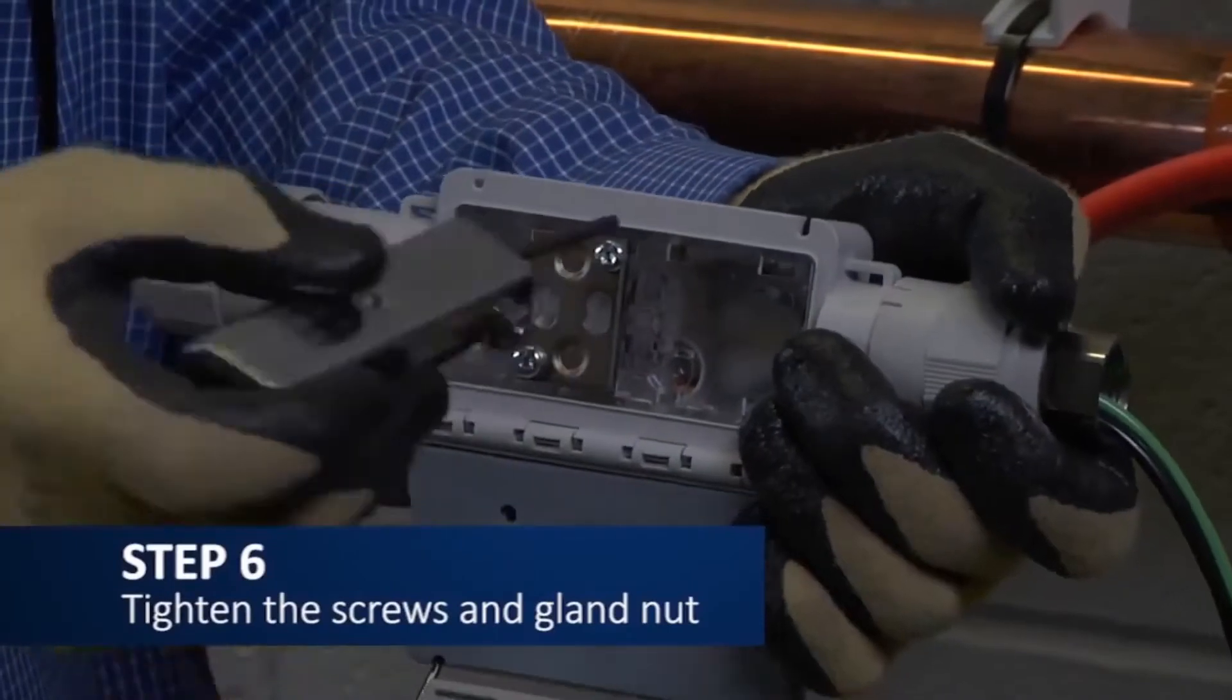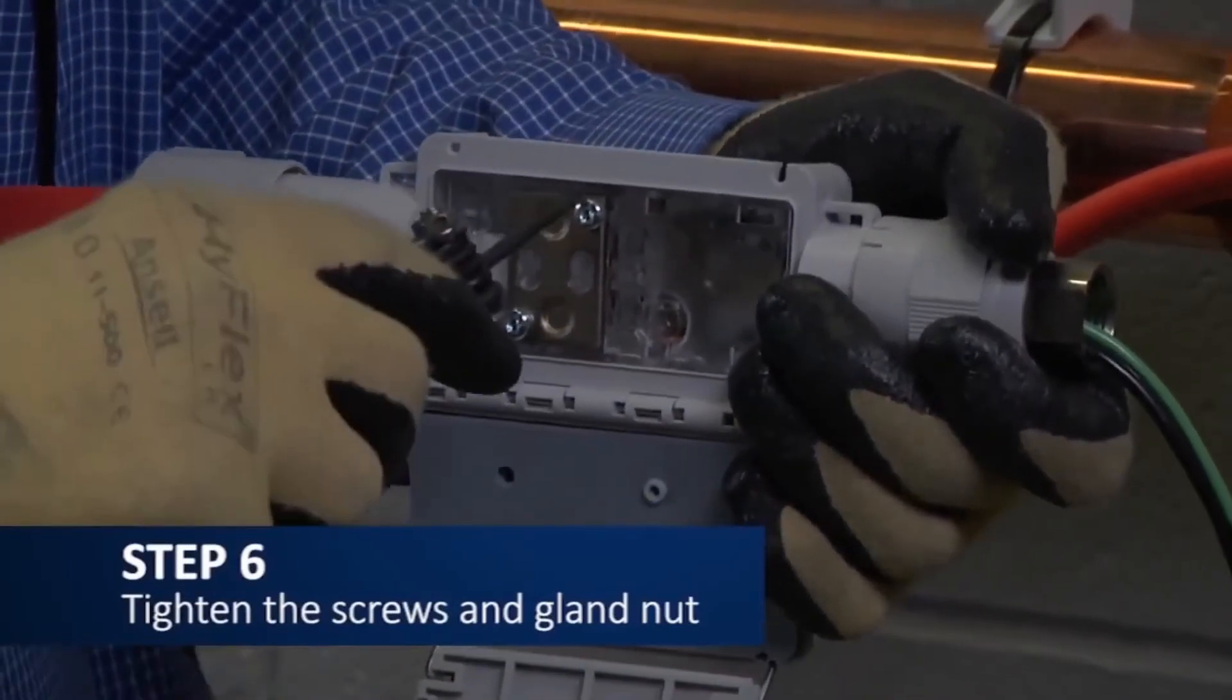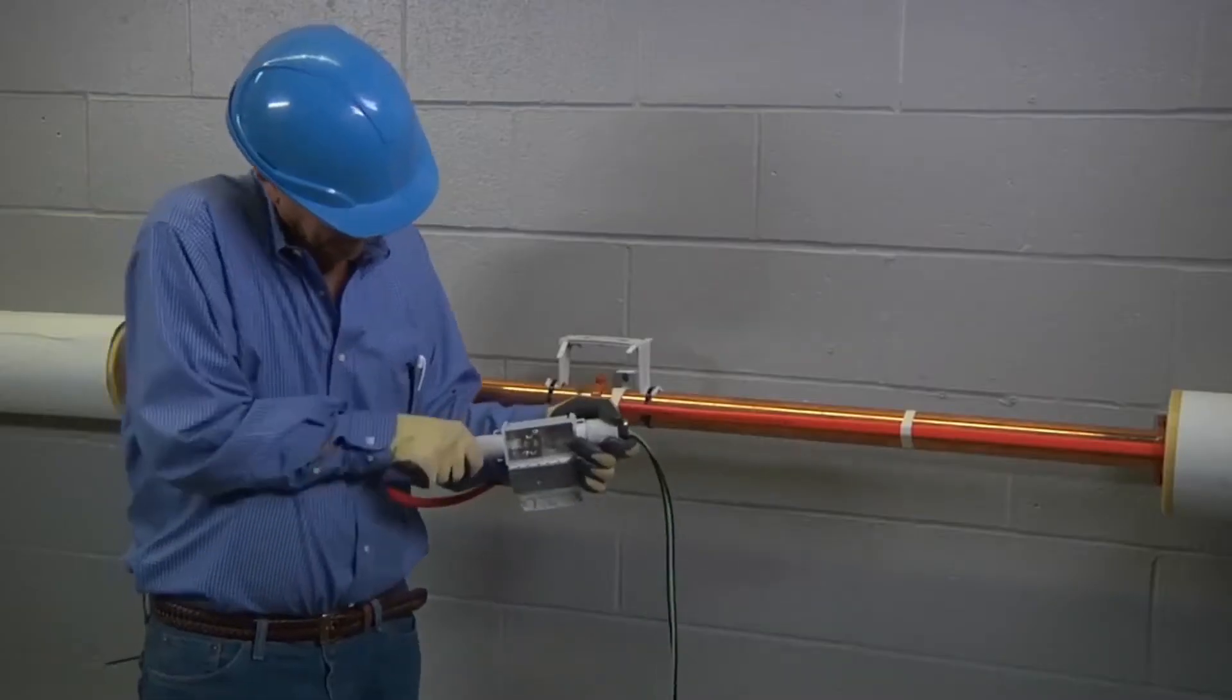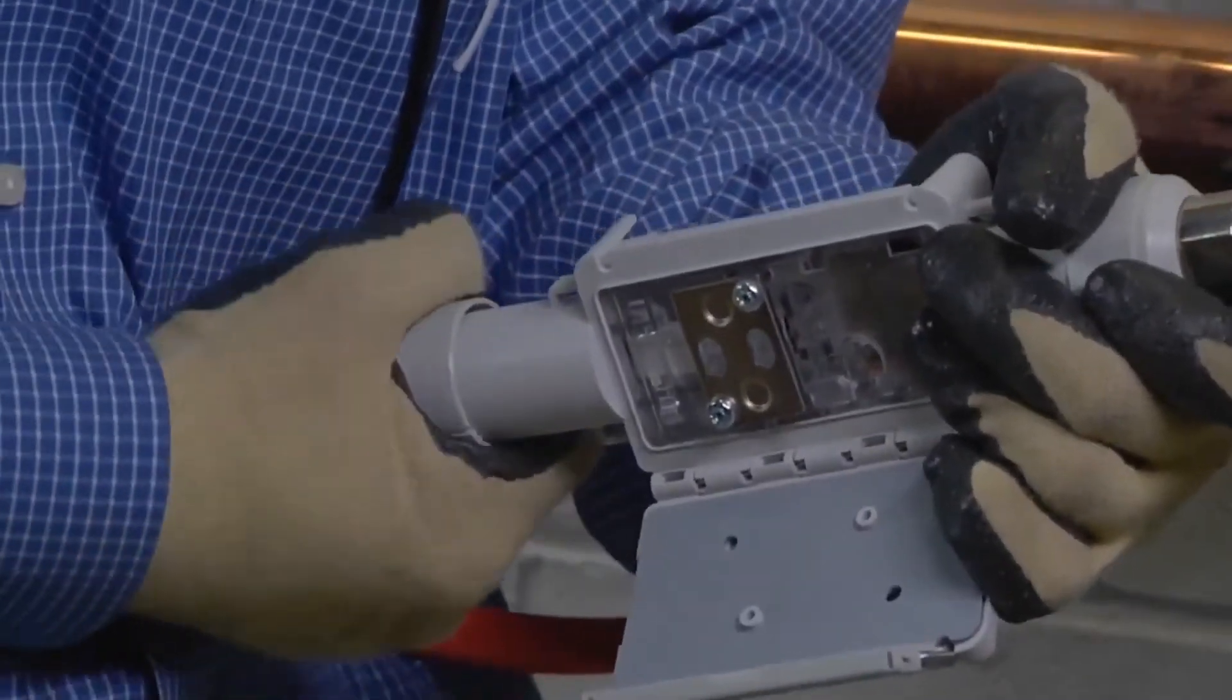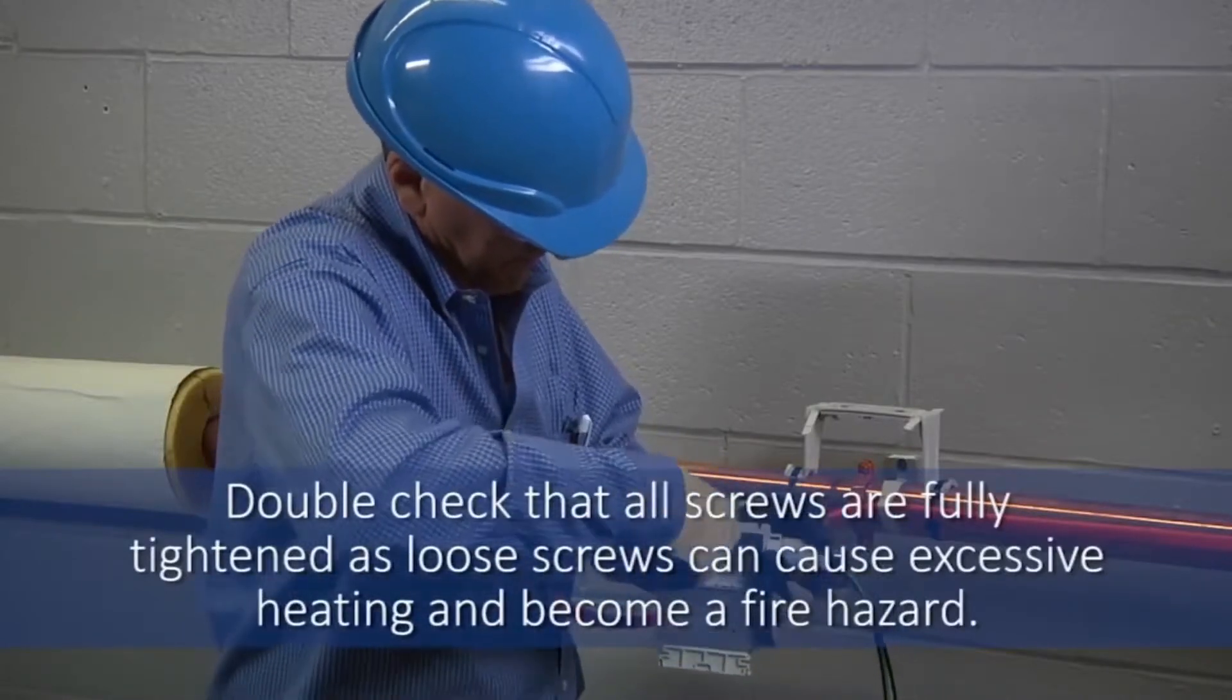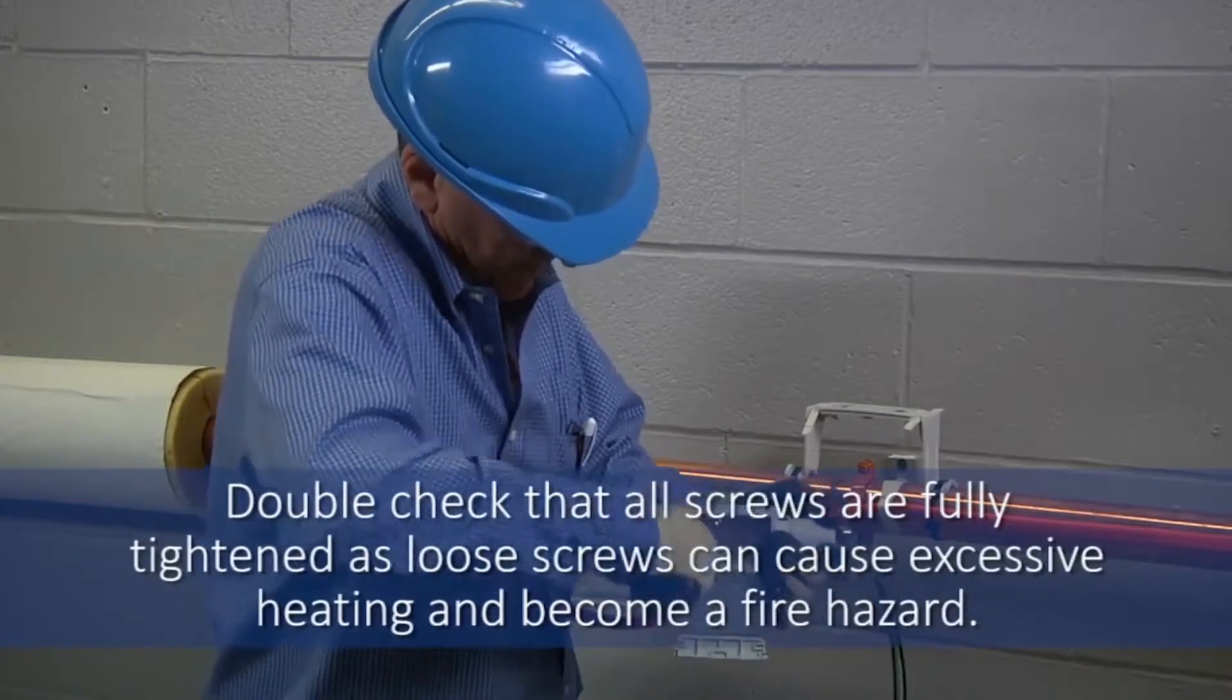Continue by tightening the Torx head connection screws with the Torx screwdriver, alternating between them as they are being tightened. Also, tighten the gland nut on the heating cable entry until the rubber grommet is compressed. Double-check that all screws are fully tightened, as loose screws can cause excessive heating and become a fire hazard.